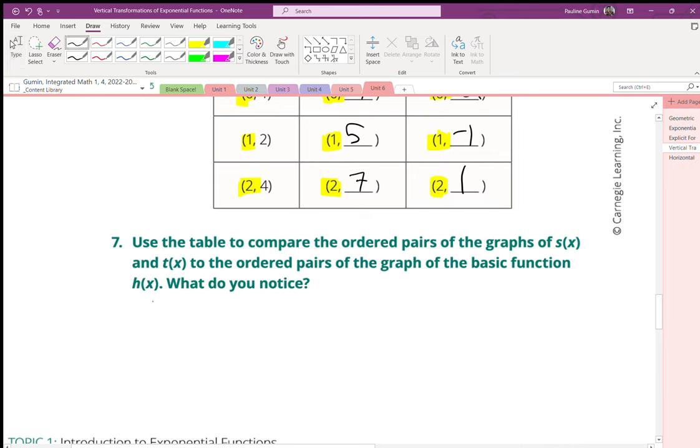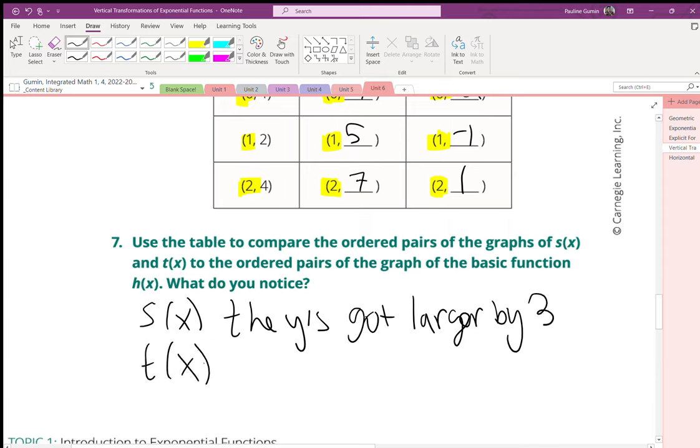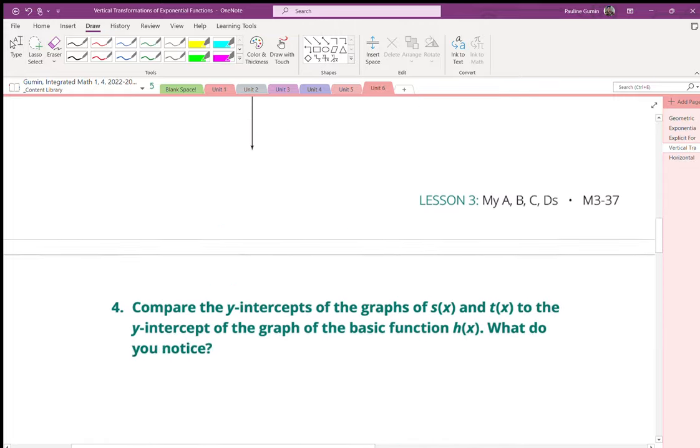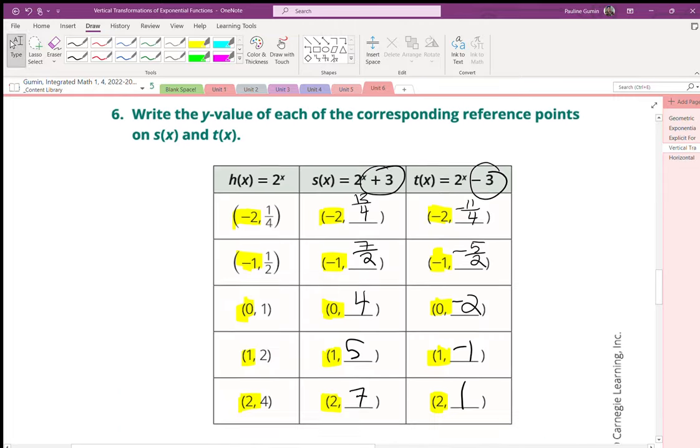For s, the y's got larger by 3. And for t, the y's got smaller by 3. So not only did we see that it moved up and down when we looked at the graph, we know exactly how much it moved up and down.